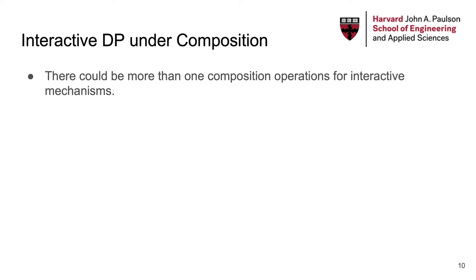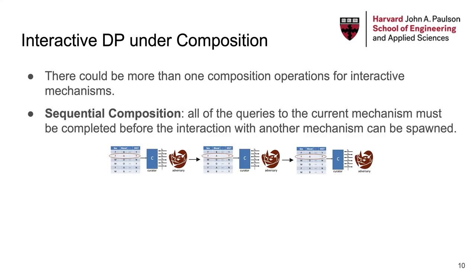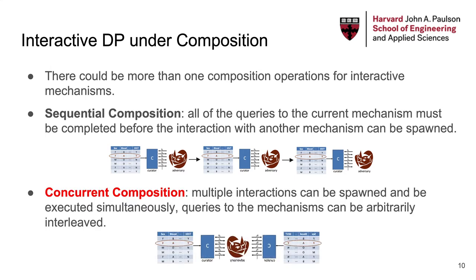A natural question regarding interactive mechanisms is whether differential privacy is also preserved under composition. However, there could be more than one composition operation for interactive mechanisms. The most straightforward one is sequential composition, where the adversary's interactive session with one mechanism must be halted before it starts an interactive session with another mechanism. In this case, all of the composition theorems we discussed earlier still apply.